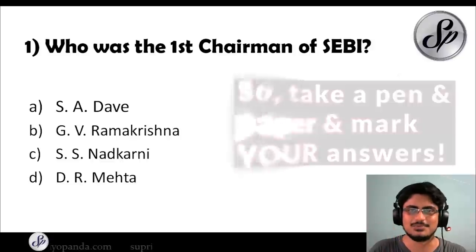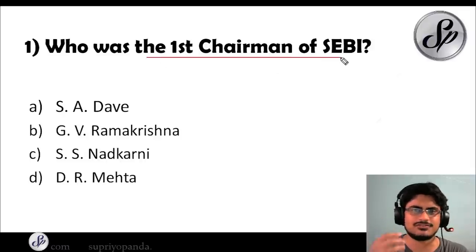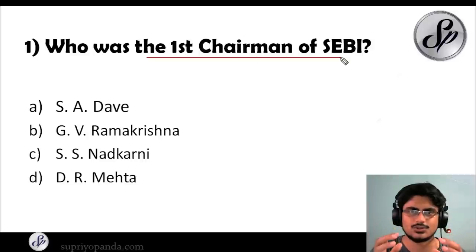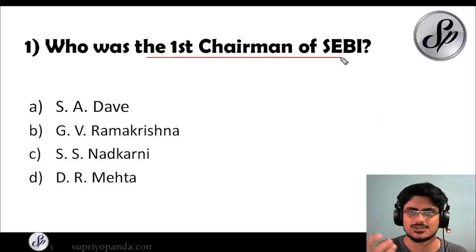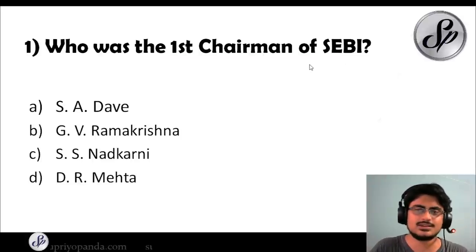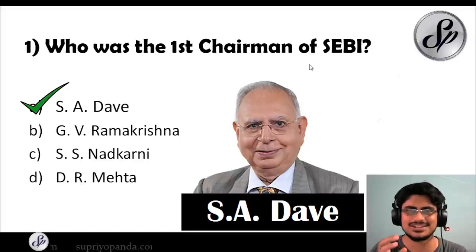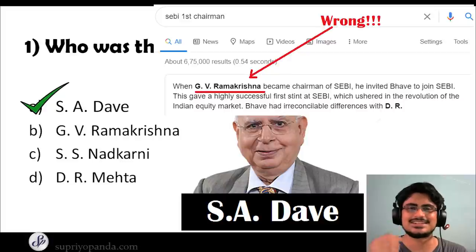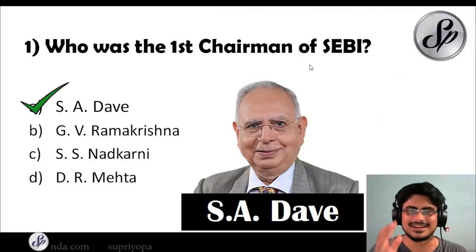Question number one: who was the first chairman of SEBI? The answer is S.A. Dave. Interestingly, if you Google this question, Google will tell you the answer is G.V. Ramakrishnan, but that is not correct. S.A. Dave is the correct answer. This is a lesson to you — do not always rely on Google.